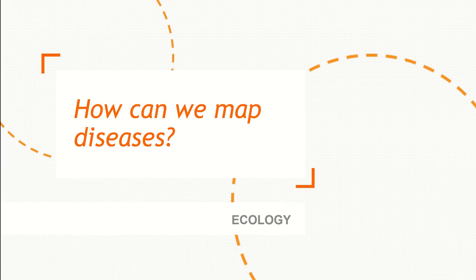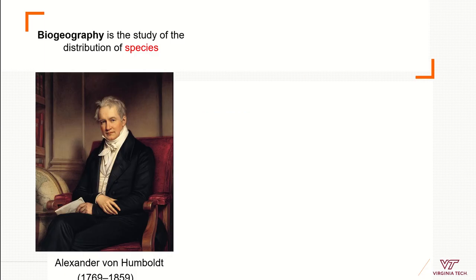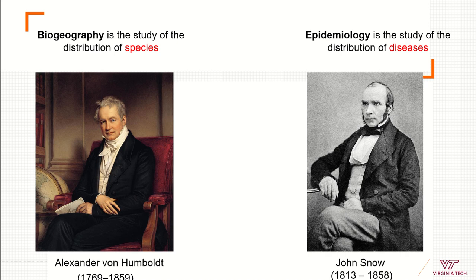So how can we take these ideas to make maps of diseases? We use ecology. One of the fathers of modern ecology and the founder of biogeography is Alexander von Humboldt. Von Humboldt defined biogeography as the study of the distribution of species — this may ring a bell because epidemiology is the study of the distribution of diseases. The only difference is that in biogeography we study many species, while in epidemiology we study species related to infectious diseases.